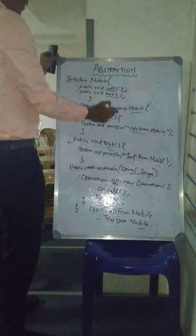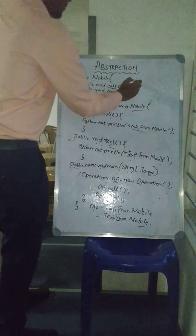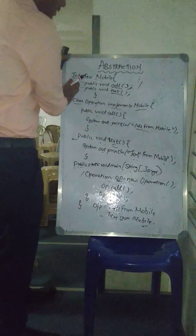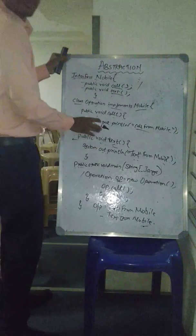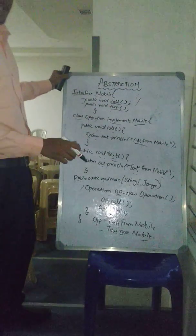So what is done? We have hidden these two methods, call and text method, and we provide the functionality here. So it's all about the abstraction. Thank you.